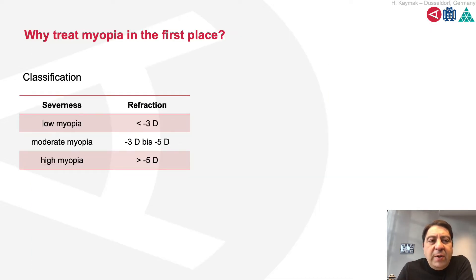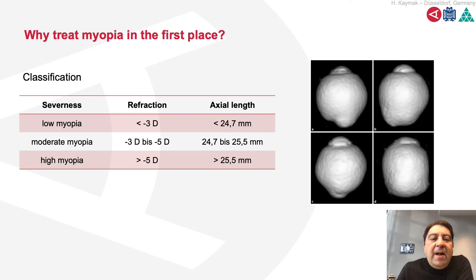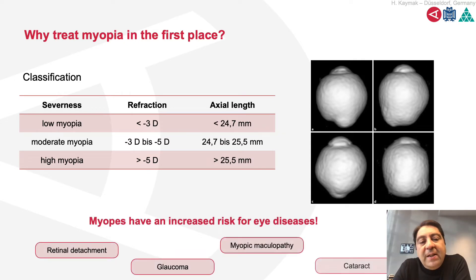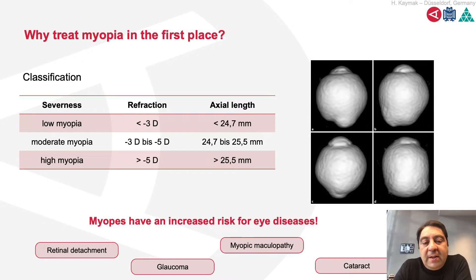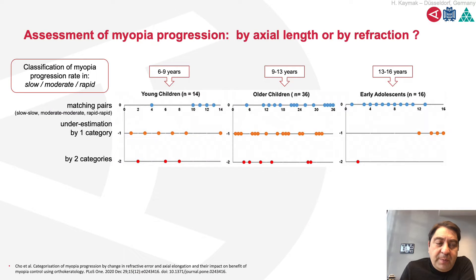Why treat myopia in the first place? It's very clear: myopes have an increased risk for eye diseases like myopic maculopathy, cataract, glaucoma, and retinal detachment.